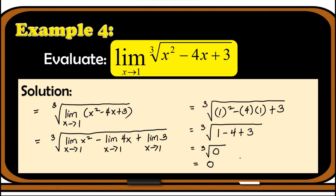So we can conclude that the limit of the cube root of x squared minus 4x plus 3 as x approaches 1 is equal to 0.